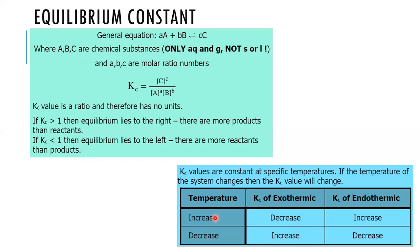Let's look at how temperature affects Kc. If the forward reaction is exothermic and we increase the temperature, according to Le Chatelier's Principle the reaction opposes the disturbance by decreasing temperature — it favors the reverse (endothermic) reaction. As the reverse reaction is favored, the amount of C decreases and the amounts of A and B increase, so the Kc value decreases.